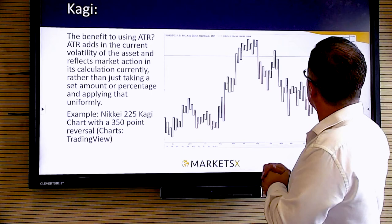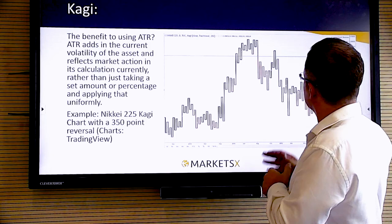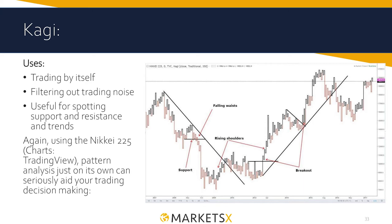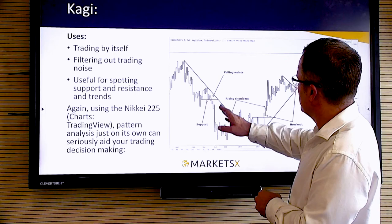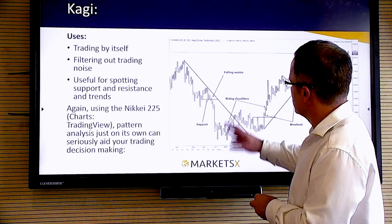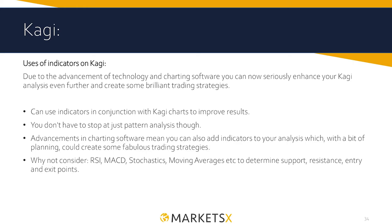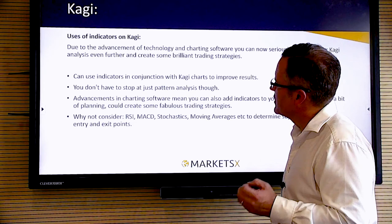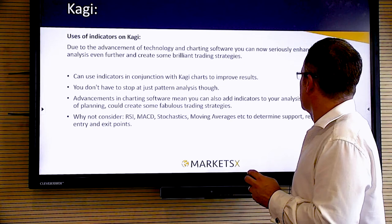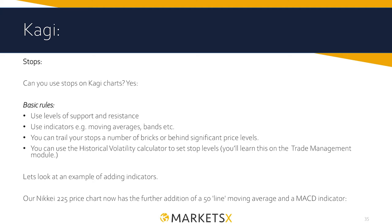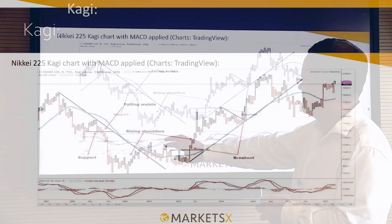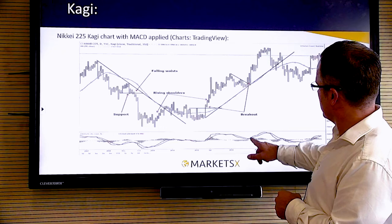You can set the lines using a fixed number of points, percentage move, or average true range — three ways of starting to use Kagi. Here it is with the Nikkei 225 over a longer period of maybe a year — easy to see the ups and downs and when to get in and out. Similar to Renko, you can draw your trend lines on; these different types of patterns actually have names, like falling waists and rising shoulders. We can do breakouts, reversals, and support and resistance. Add indicators on top — RSI, MACD, stochastics, moving averages — all to determine support, resistance, and entry and exit points. For example, here we've got a Kagi chart with the MACD oscillator and some trend lines — a buy signal on the MACD comes in line with a breakout bouncing off support.